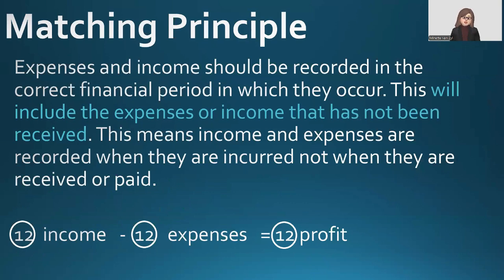Then the Matching Principle. Expenses and income should be recorded in the correct financial period in which they occur. This includes expenses or income that has not yet been received — those accrued income and accrued expenses. This means income and expenses are recorded when they are incurred and not when they are received or paid. At financial year end we make adjustments — income received in advance, we take the income out of income and place it into a liability. Accrued income, we add to that income account and create an accrued income account which is an asset. For the matching principle, we want 12 months of income minus 12 months of expenses to give us 12 months of profit.